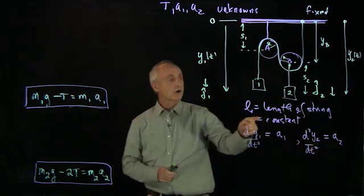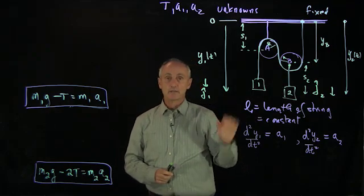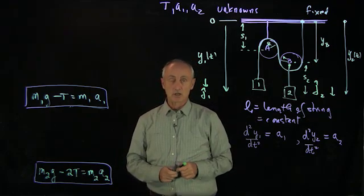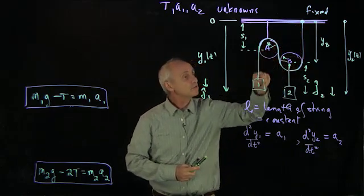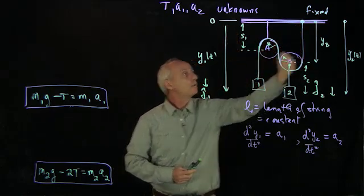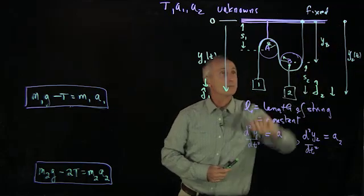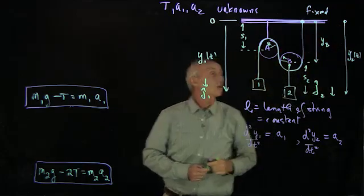Now let's look at our constraint condition that the length of the string is constant. What we're going to do is try to see if we can express the length of this string in terms of all the coordinate functions and some of these ancillary quantities.